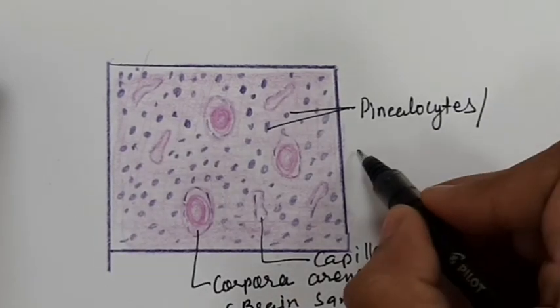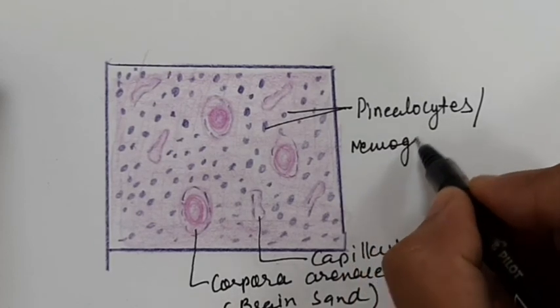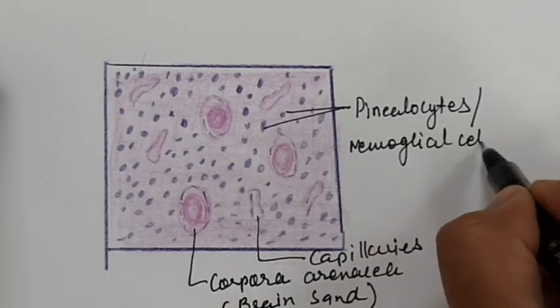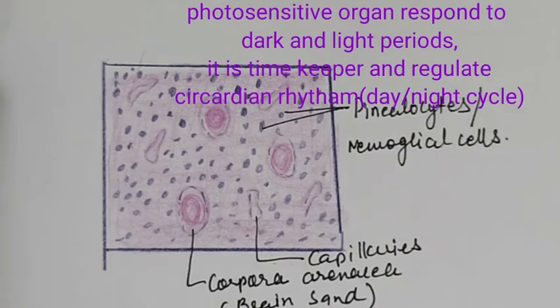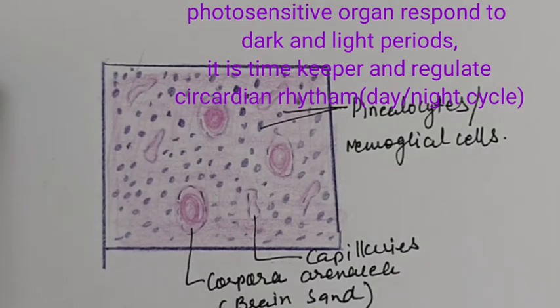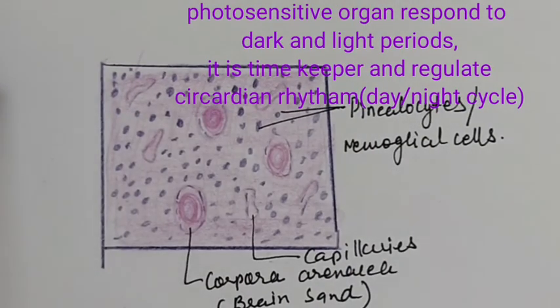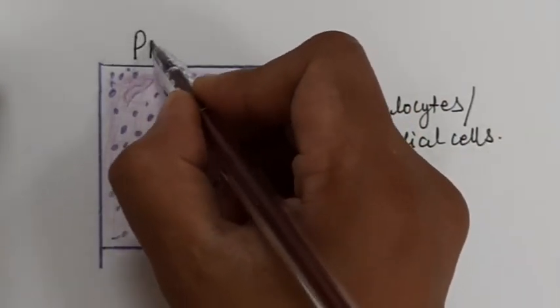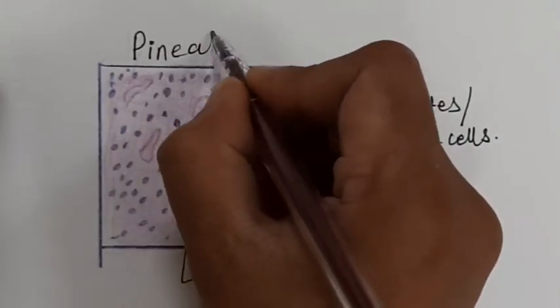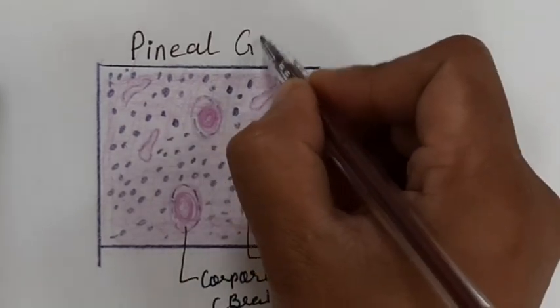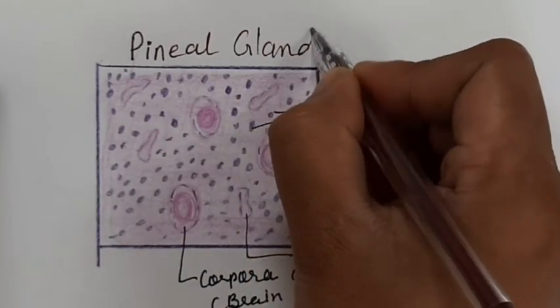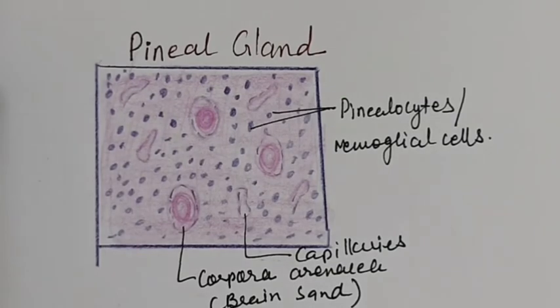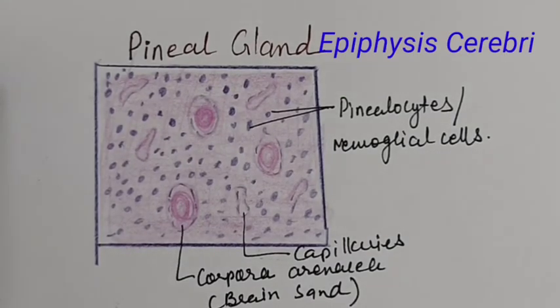Melatonin is released from the pinealocytes at night and inhibits the release of gonadotropic hormones from the anterior pituitary. The pineal gland also releases arginine vasotocin hormone, which has anti-gonadotropic activities.